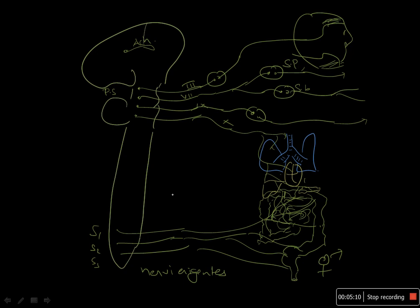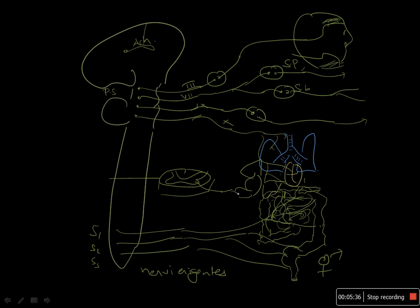All the preganglionic and postganglionic parasympathetic neurons are cholinergic. Looking at a cross-section of the spinal cord, the anterior horn gives rise to the motor root, which supplies muscles. This motor nerve is also releasing acetylcholine as a neurotransmitter — so all motor nerves are also cholinergic.